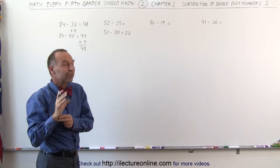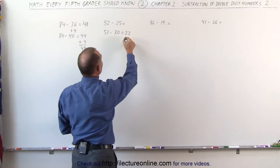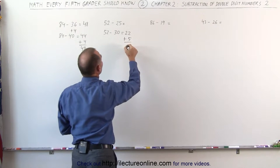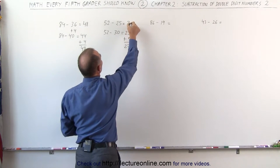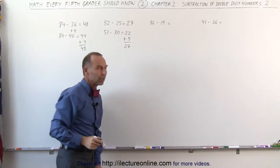But remember, I subtracted 5 more than I should. That means I need to add 5 more to the answer. So that gives me 27, which is my final answer.